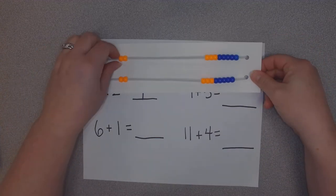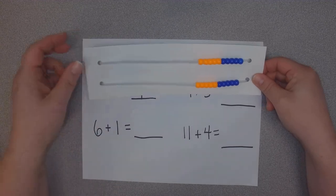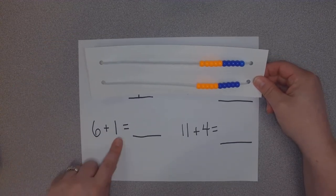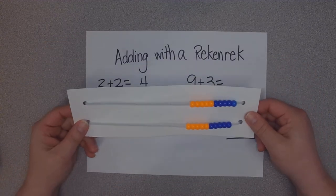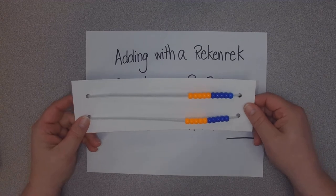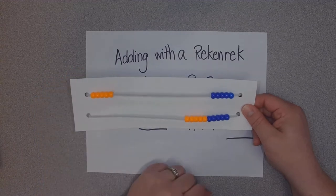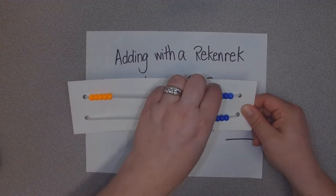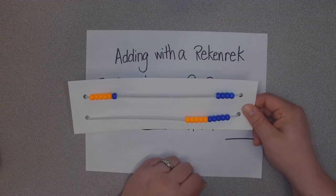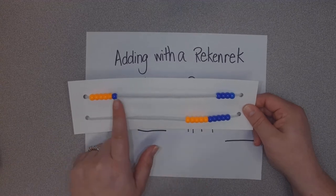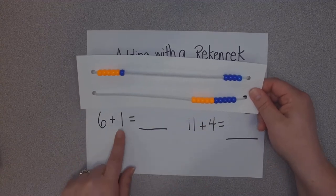Let's do this next one. I erase my little Rekenrek board, moving them back over. Now I have 6+1. What's neat about a Rekenrek is you don't always have to count out the six. I know that I have five of one color, so that's five. And if I move one more over, that's six. Five and one, there's six here.